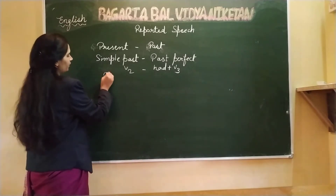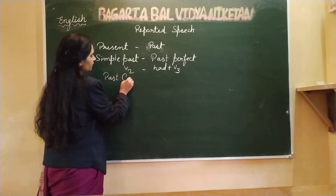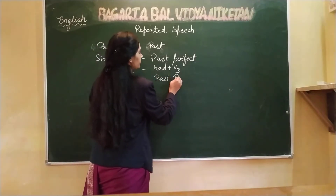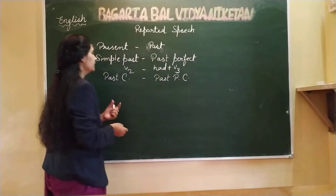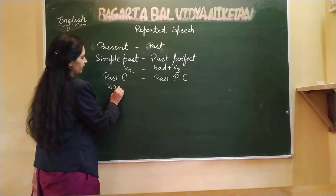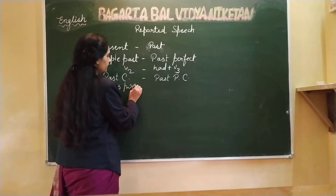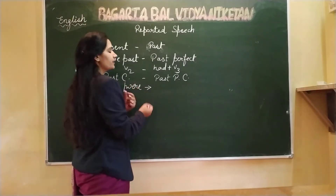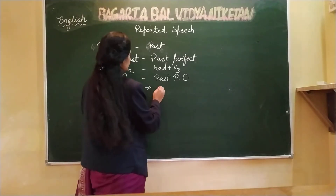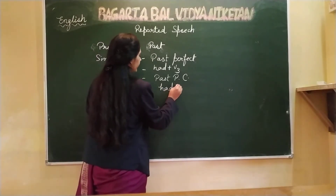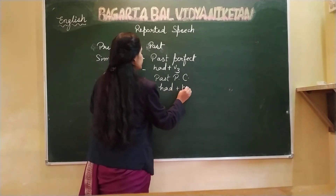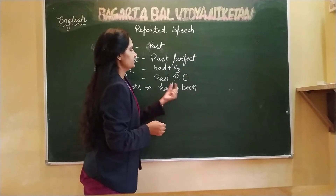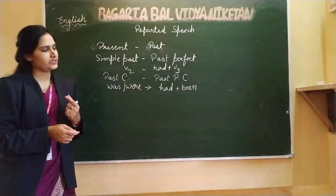Then comes past continuous. Past continuous tense changes to past perfect continuous tense. It means 'was' plus verb, if used in the direct sentence, when you change it to the indirect sentence you use 'had been' plus verb's first form with '-ing'. The continuous form stays the same.